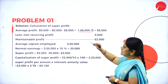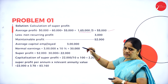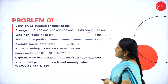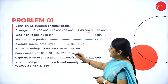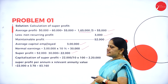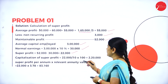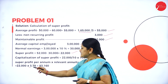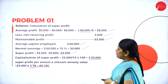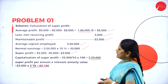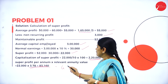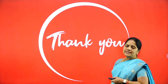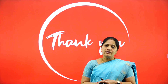Total profits are 1,65,000 divided by 3 equals 55,000. Deduct non-recurring profit of 3,000, giving future maintainable profit of 52,000. Average capital employed is 3 lakhs; normal earnings is 30,000. Super profit is 52,000 minus 30,000 equals 22,000. Capitalizing: 22,000 divided by 10 multiplied by 100 equals 2,20,000. Under the annuity method: 22,000 multiplied by 3.78 equals 83,160. So goodwill equals Rs. 83,160. With this, we come to the end of this session. Hope you have all followed it. Thank you.